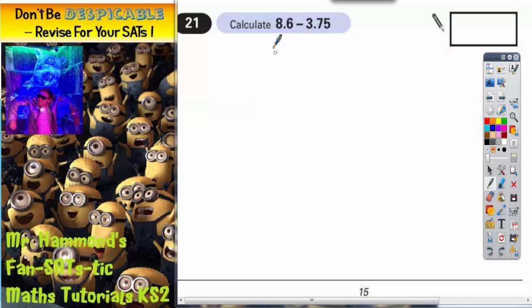First job is, because it's a subtraction, the biggish number has to go on the top. And obviously 8.something is bigger than 3.something, so we've got to have 8.6 on the top.